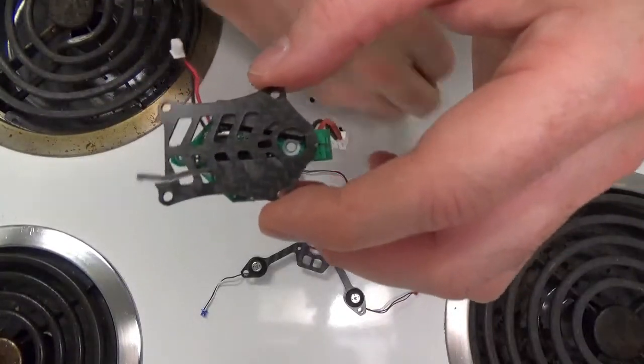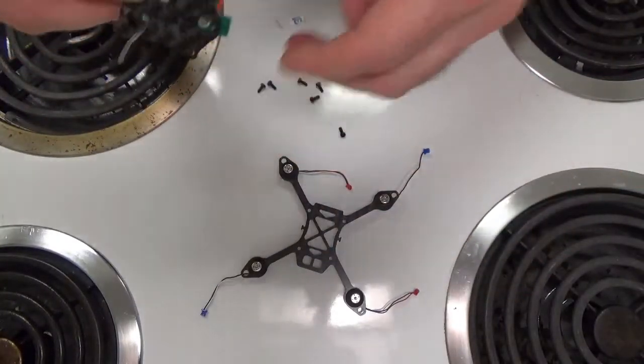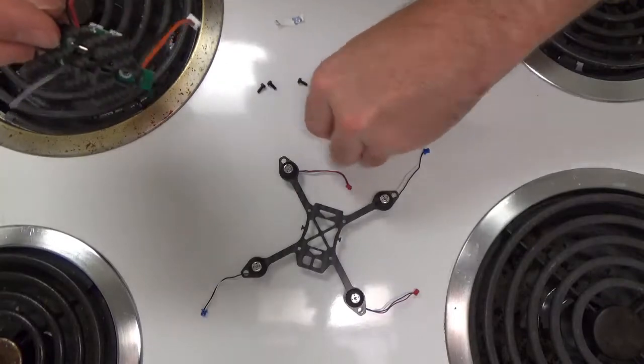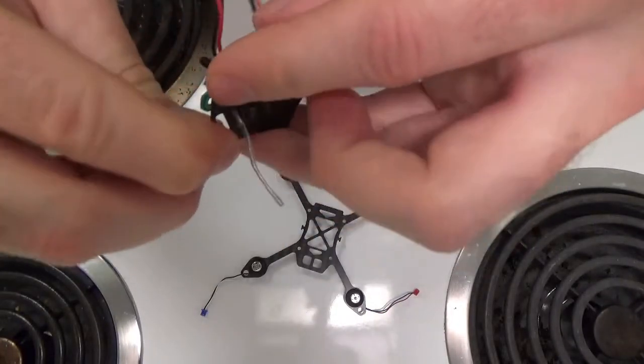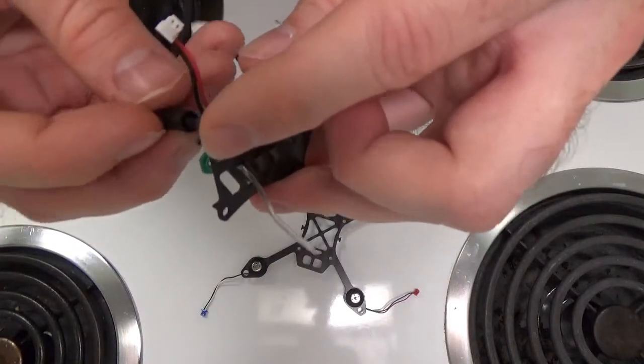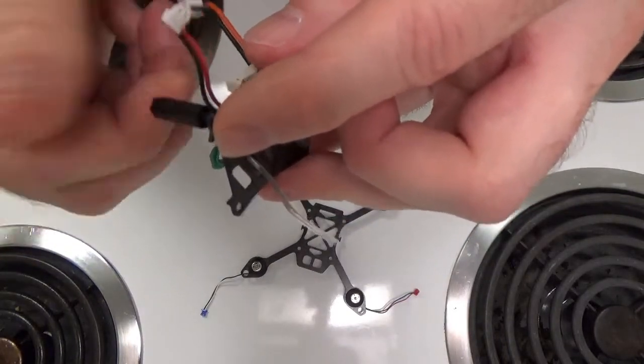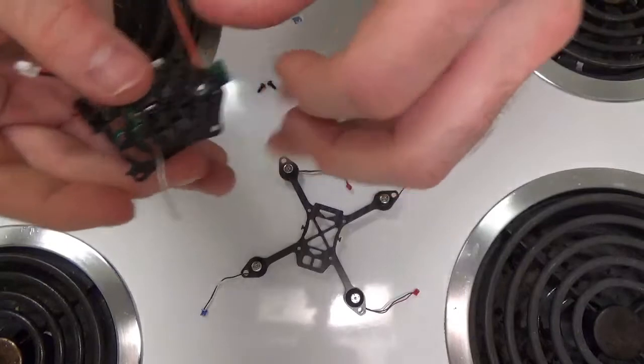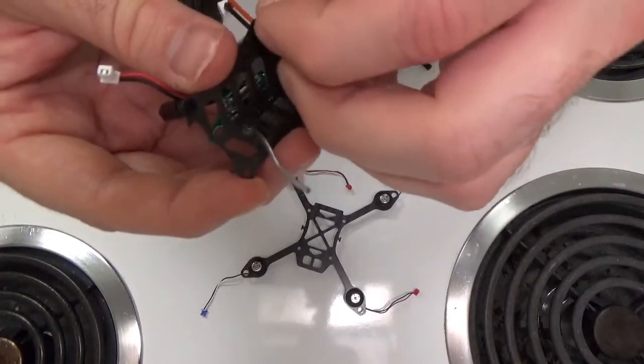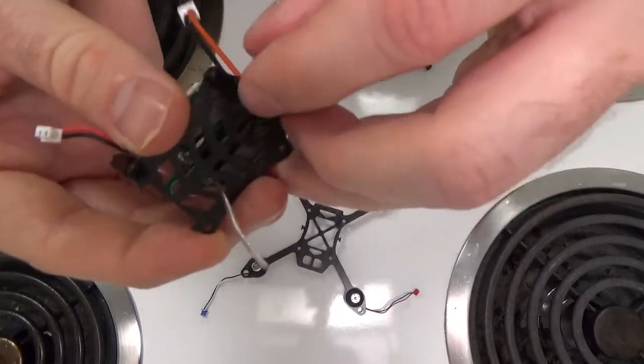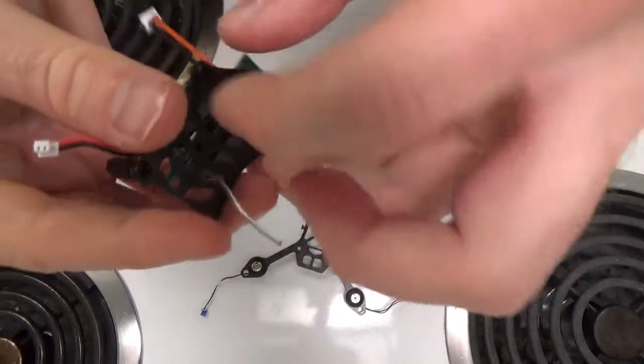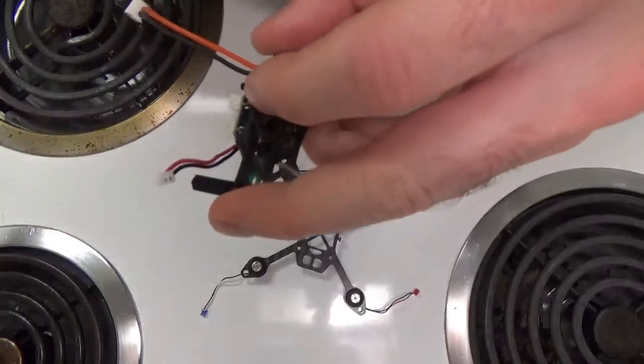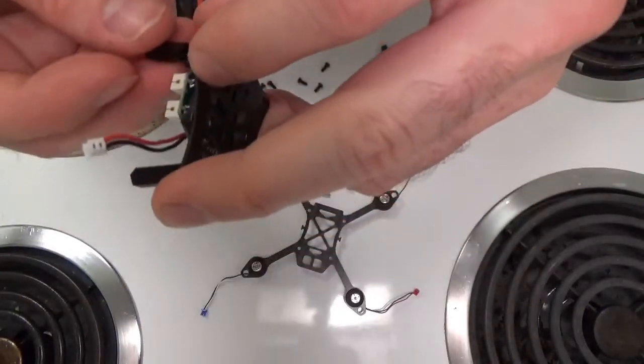What we'll do next is take the standoffs and attach them with the screws that come with the kit. The easiest way to do that is just push the screw through and then screw the standoff onto the screw.